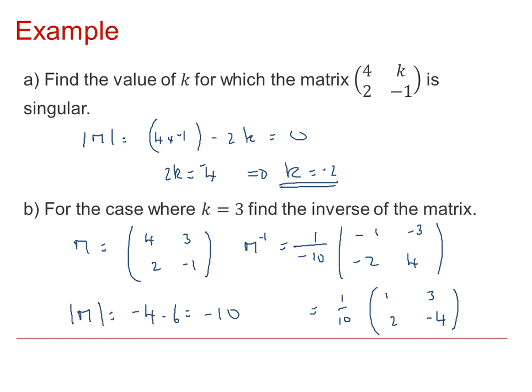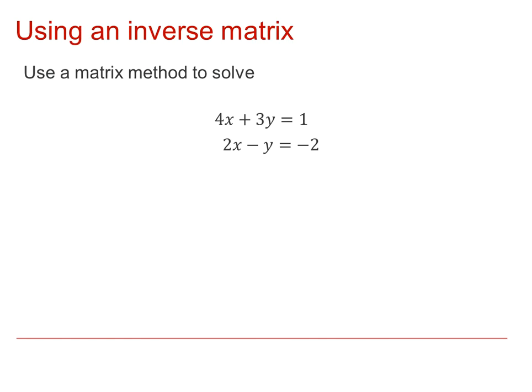The idea of using inverse matrices allows us to solve simultaneous equations. A pair of simultaneous equations can be written as a single matrix equation by taking the coefficients 4, 3, 2, -1, and multiplying by little column (x, y), and that must be equal to (1, -2).